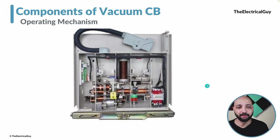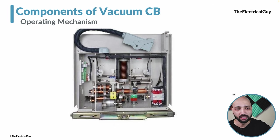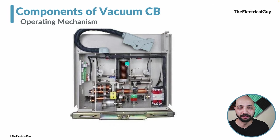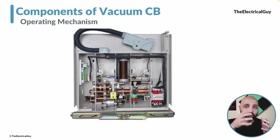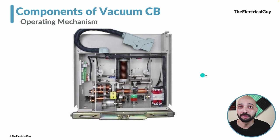The next important component is the operating mechanism. We want to close and open the circuit breaker, and for that we need an operating mechanism, which is provided in the front of the circuit breaker. This is mostly a spring operated mechanism, just like what we saw in high and extra high voltage circuit breakers — springs are used in a complete mechanical assembly. This section also contains all the control circuitries: logics to open and close the circuit breaker, closing coil, tripping coils, and different MCBs — everything is provided inside this front panel of the circuit breaker.